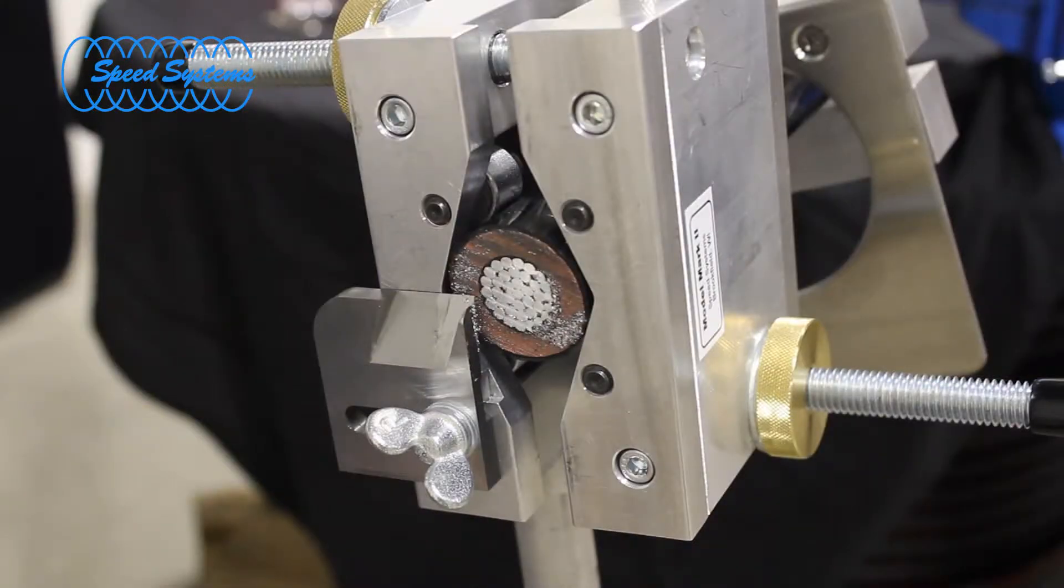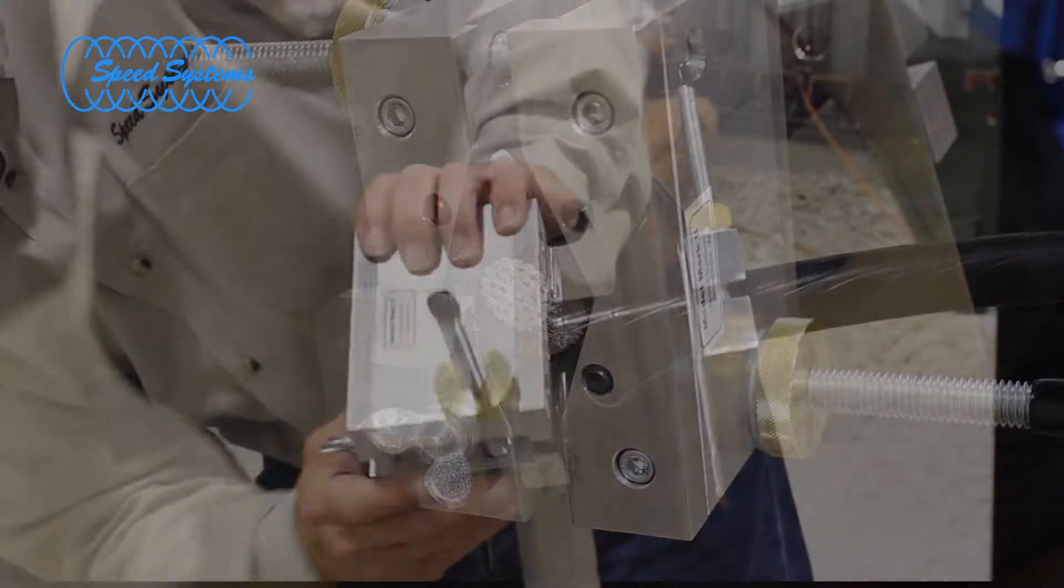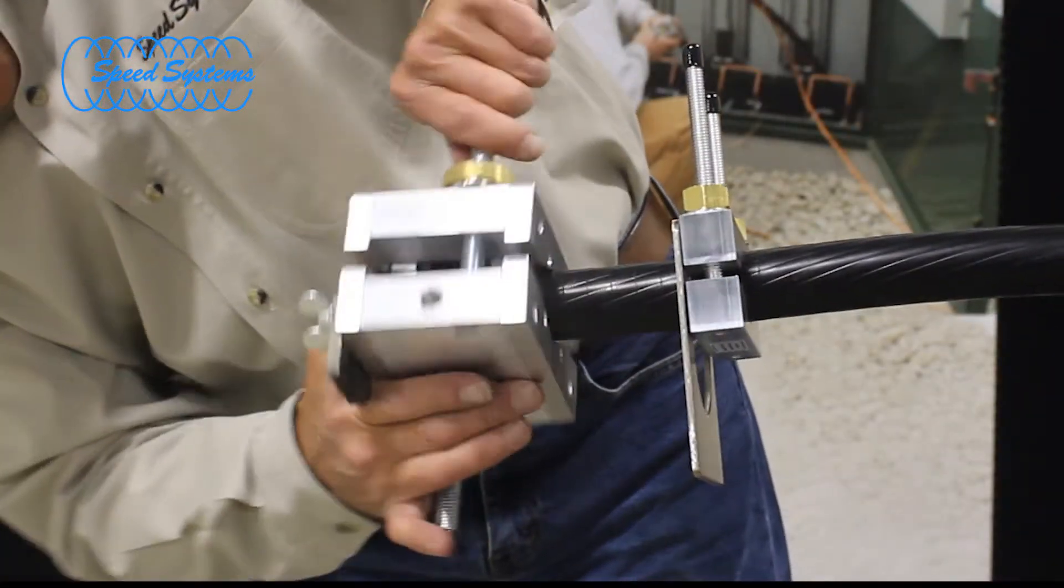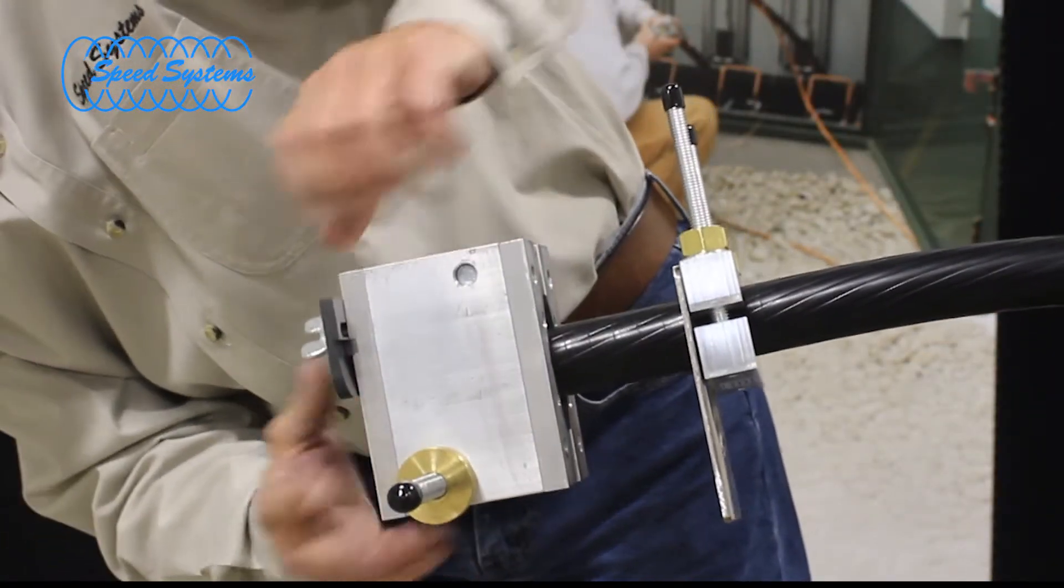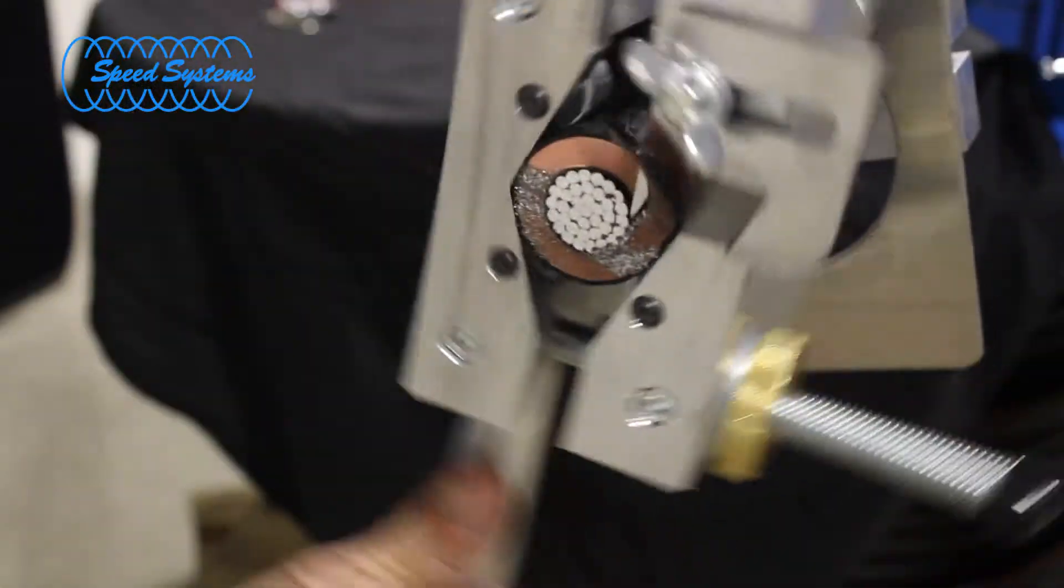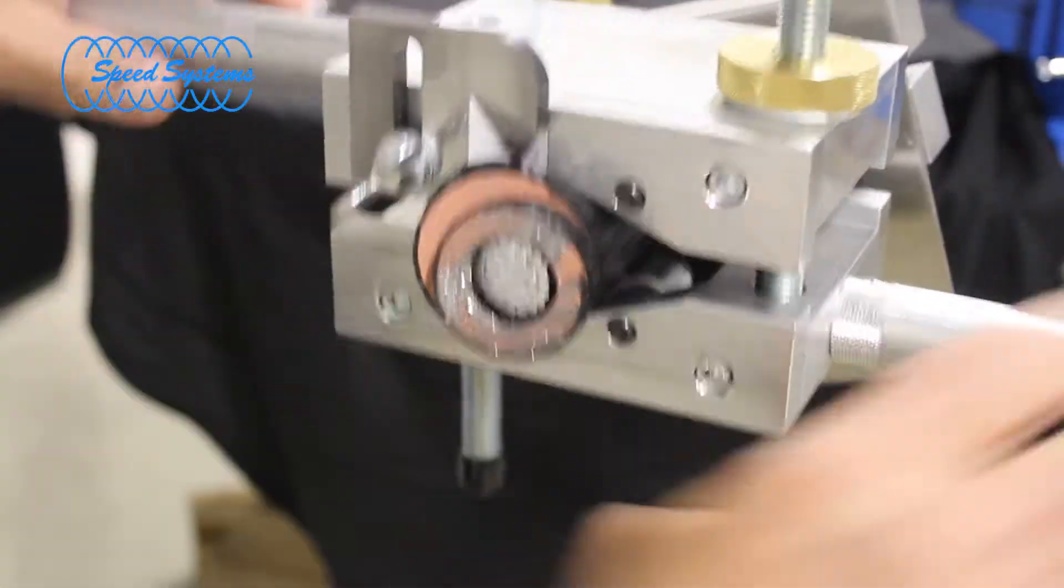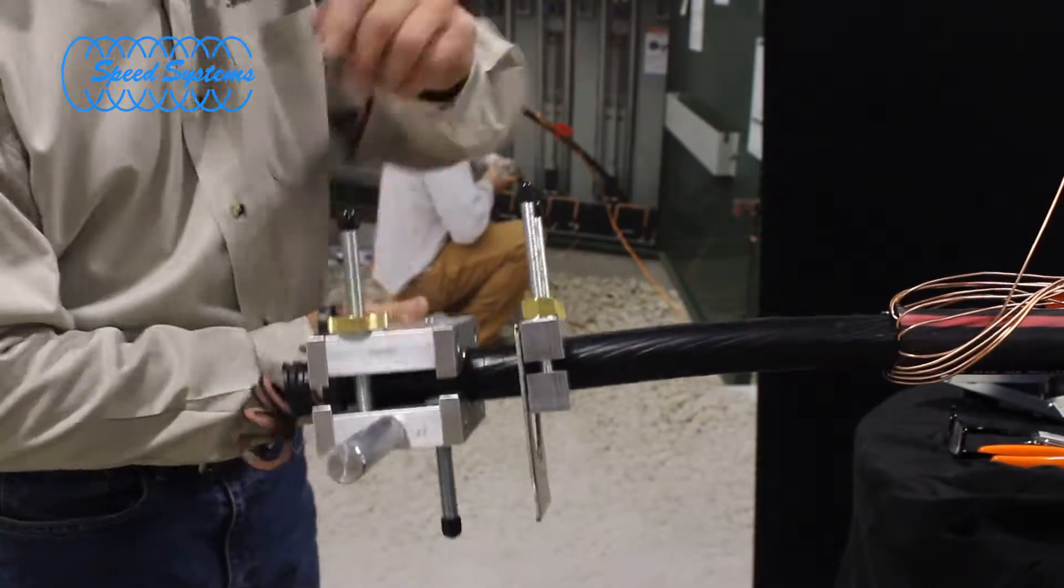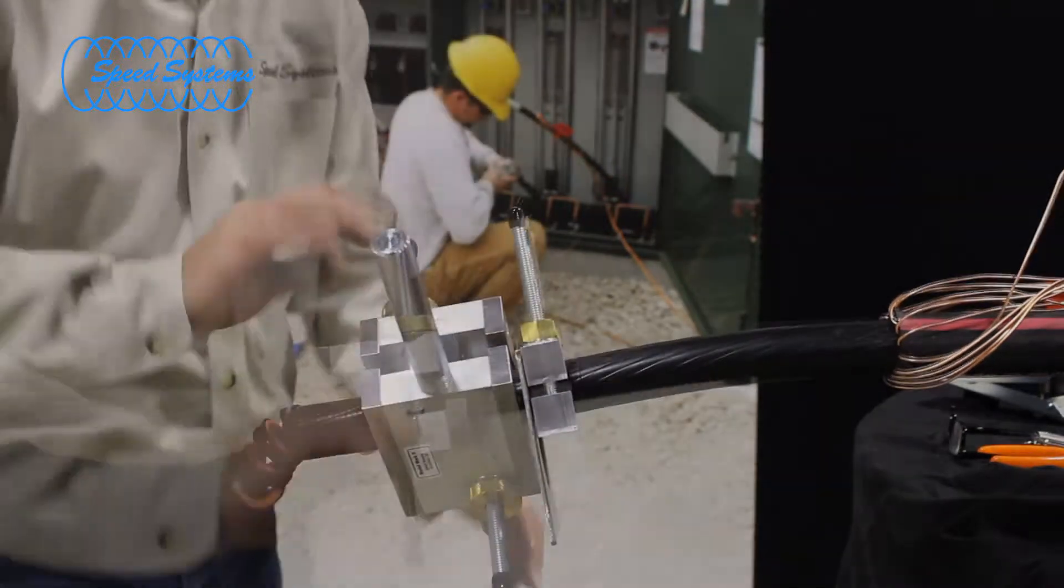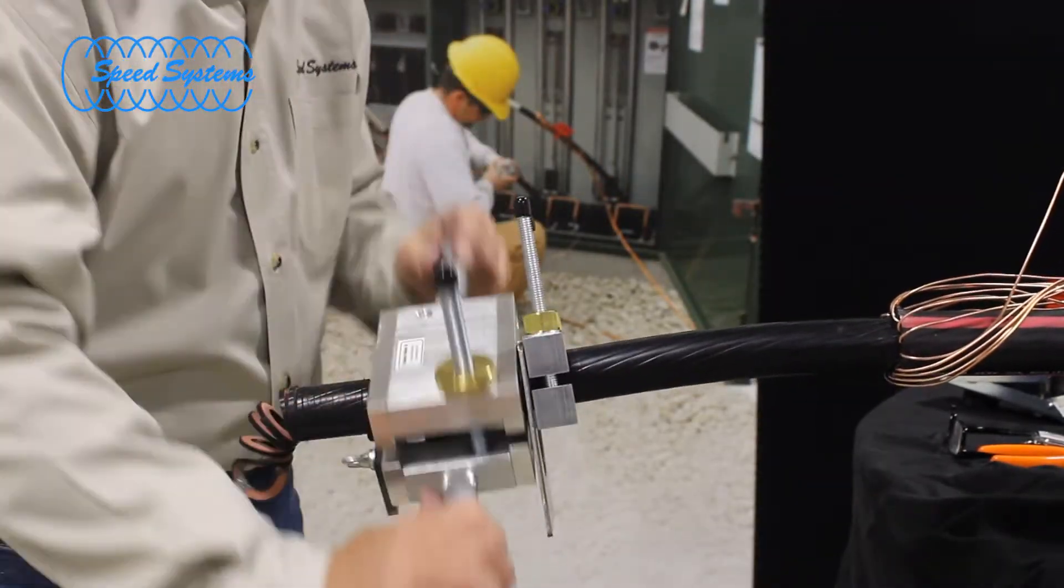Set the blade depth to approximately 1/16th of an inch shy of the conductor and rotate the tool backwards around the cable one time to visually verify that the blade will not contact the conductor at any point. Rotate the tool around the cable to begin stripping the insulation. The angled guide rollers draw the tool into the cable as you rotate it. The tool will stop and square off the cut when it contacts the tool stop.